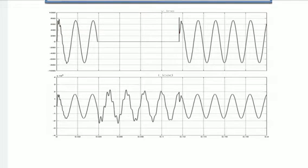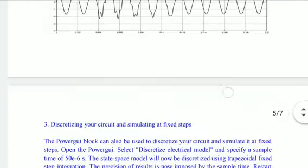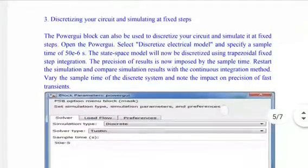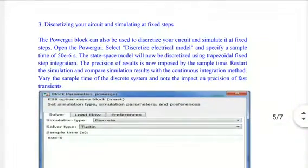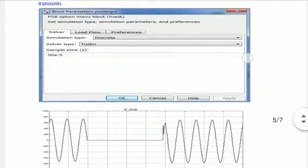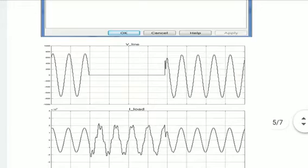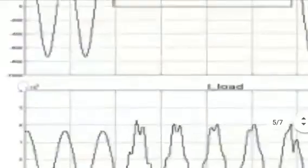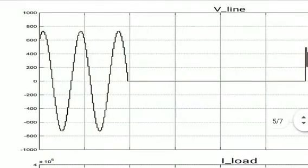Discretizing your circuit and simulating at fixed steps. You can discretize your circuit at a sample time of 50e-5, solver type testing. Then you can see this discretizing waveform. It is discretized as shown here.